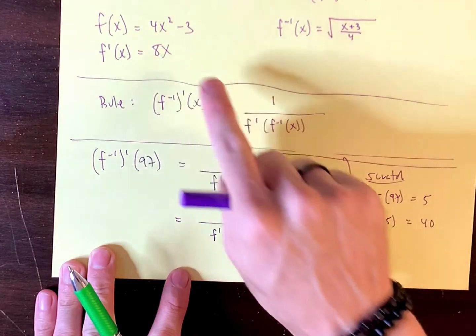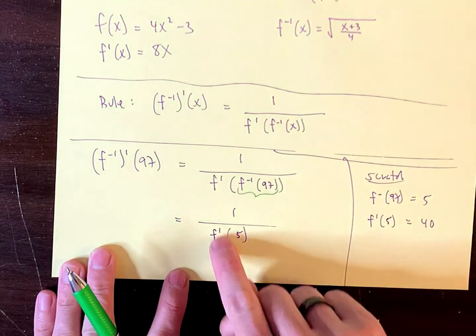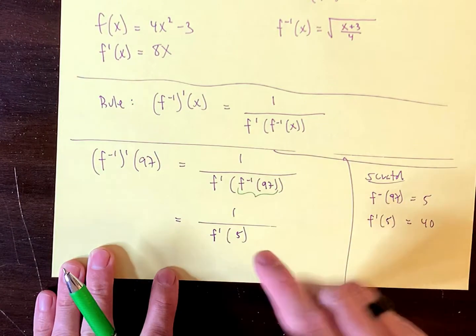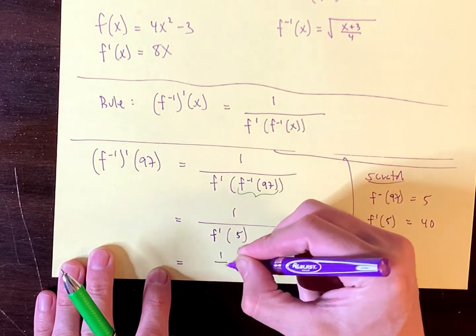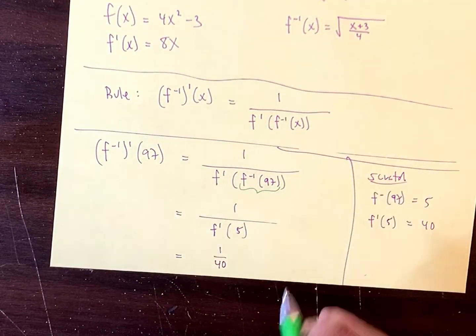Because 8 times 5, right? You plug in 5 into the derivative there. That's 40. So 40 replaces that. So check it out. Final answer is 1 over 40.